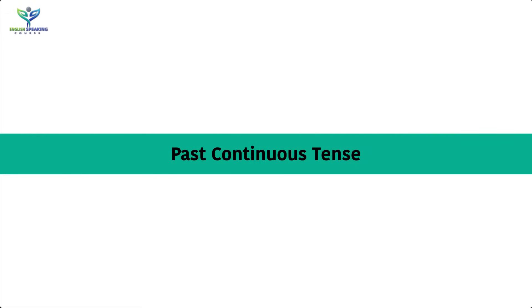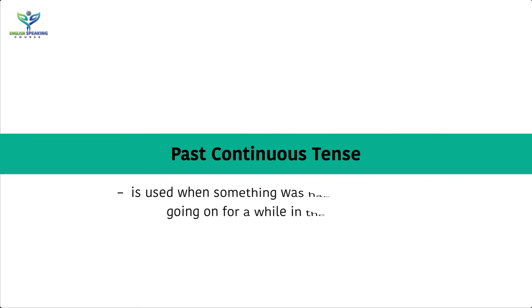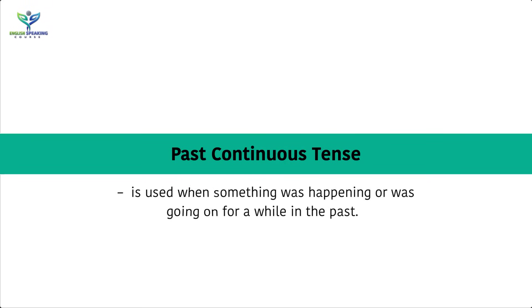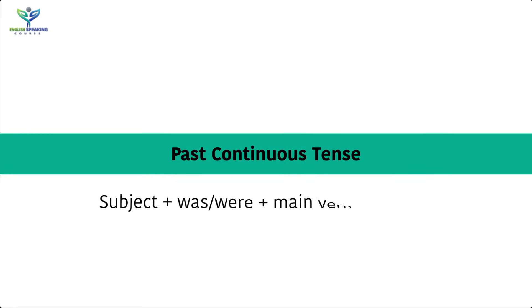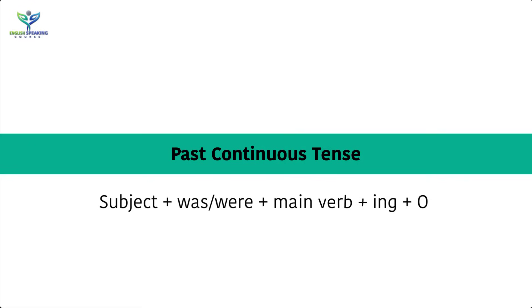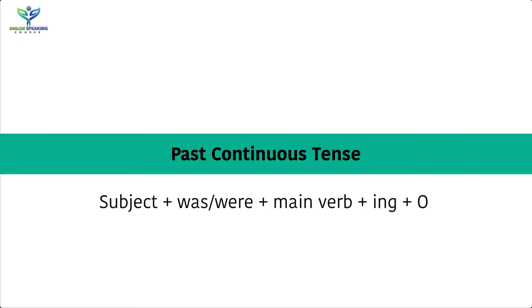Past Continuous Tense is used when something was happening or going on for a while in the past. The sentence structure is: Subject + was/were (according to person and number) + main verb + ing + object.